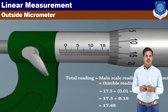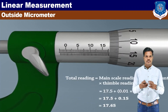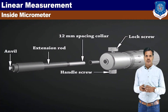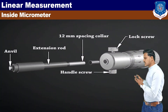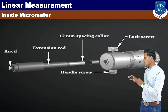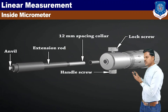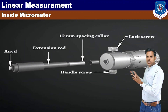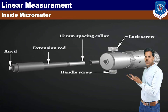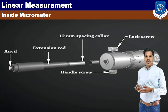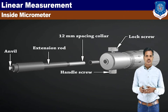Next, we will see the inside micrometer. The inside micrometer has different parts: the anvil, extension rod, 12 mm spacing rod, head, handle screw, and lock screw.